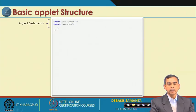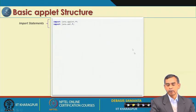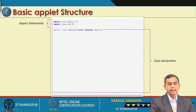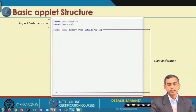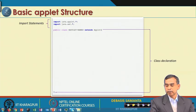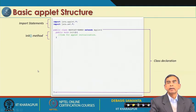An applet has some essential components. The two packages to be included whenever you do applet programming are java.applet and java.awt. Then we have to create our own class, which should be inherited from the Applet class using the extends keyword: public class YourName extends Applet. Next are the different methods defined within this class.